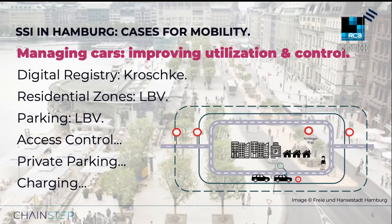In Hamburg, the Behörde für Verkehr und Mobilitätswende — roughly translated as the agency for transportation and mobility turnaround — is planning to change things. Cars will not go away tomorrow, but the idea is to improve utilization and control where they can go and when. An important piece of the puzzle is the Landesbetrieb Verkehr, tasked with managing car traffic in general in Hamburg, including restricting cars from Jungfernstieg and Mönckebergstraße, two of the main roads in the city center.